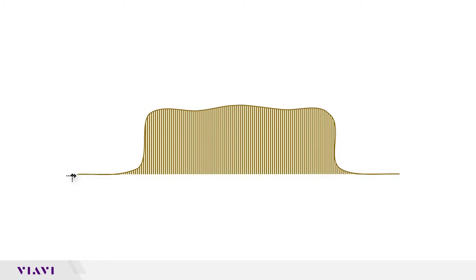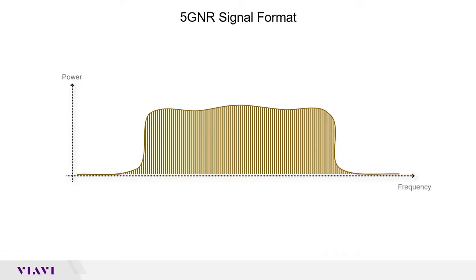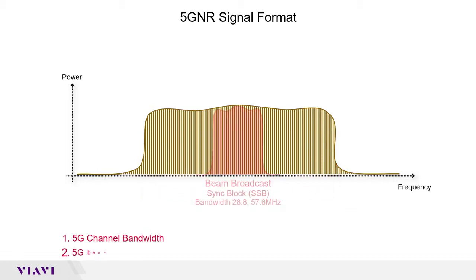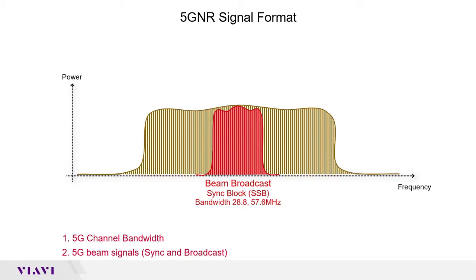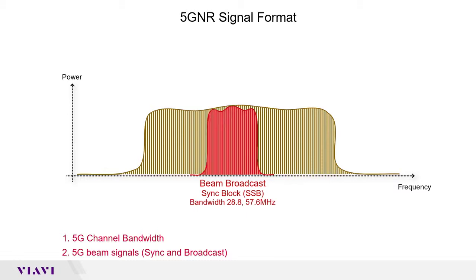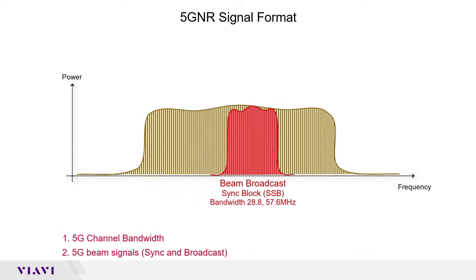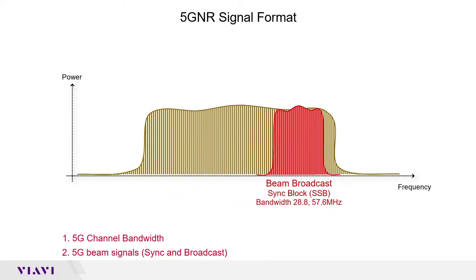There are a couple of key properties in a 5G NR signal. First is channel bandwidth — in millimeter wave it can go from 100 to 400 MHz. Second is beamforming. Beam broadcasts are being sent out in SSB blocks, which are not distributed across the channel bandwidth, but you can have a frequency offset within the channel.